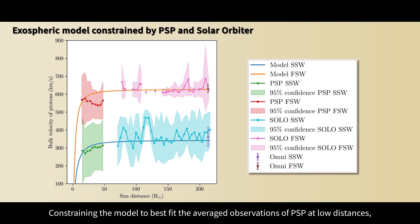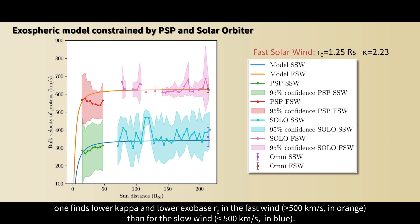Constraining the model to best fit the averaged observations of PSP at low distances, Solar Orbiter from 70 to 215 Rs, and OMNI at 1 AU, one finds lower kappa and lower exobase r0 in the fast wind than for the slow wind.